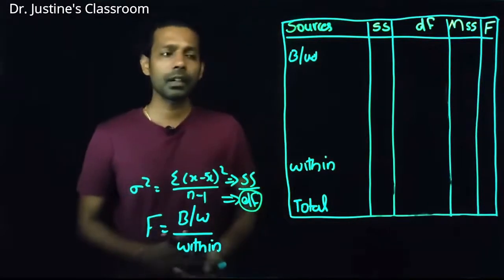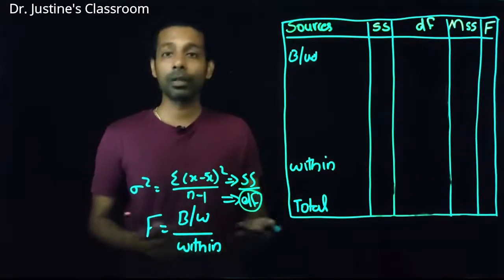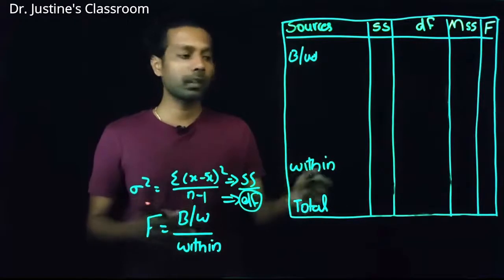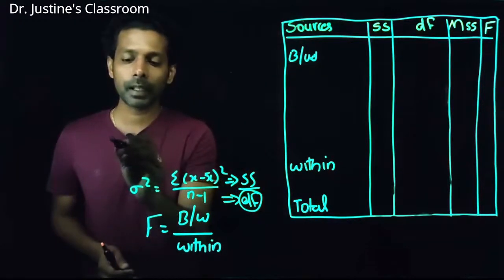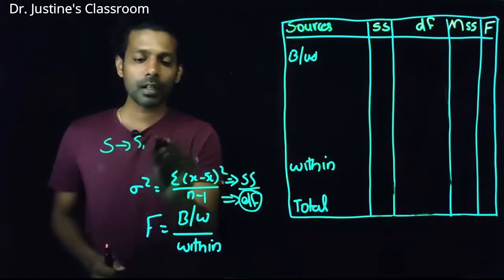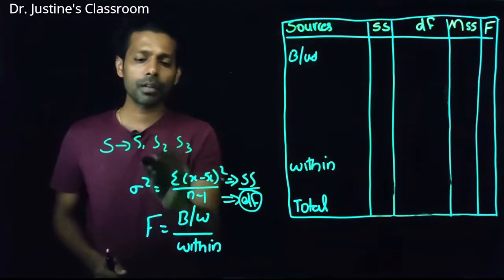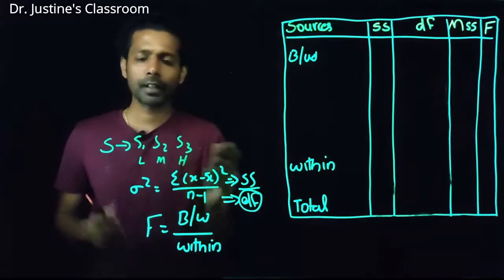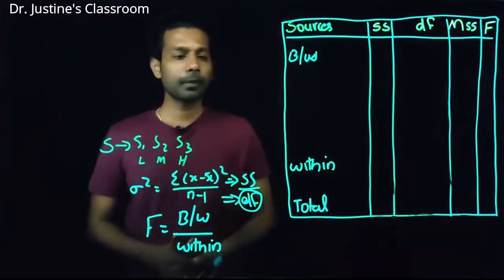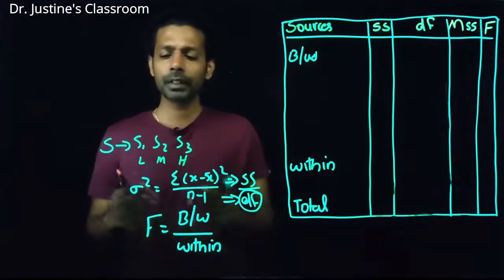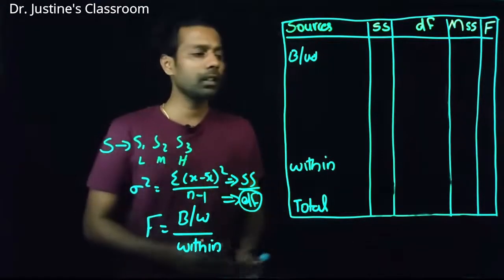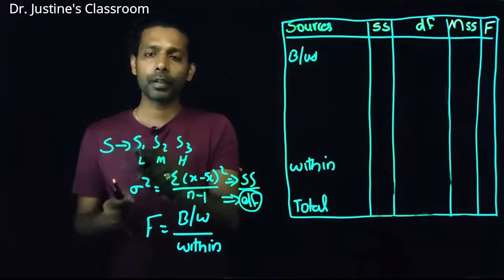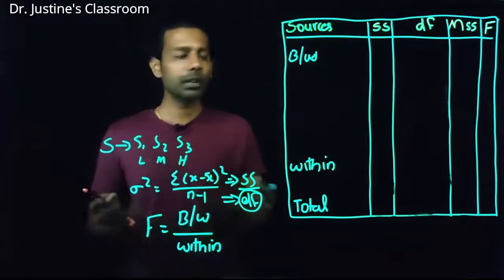Let us consider an independent variable — sound (I'm using 'S' instead of 'N' for noise to avoid confusion). I have three conditions: S1, S2, and S3 — low noise, moderate noise, and high noise. The dependent variable is the performance of employees. The objective is whether sound has an effect on performance. This is a between-group design: one group for S1, another for S2, another for S3.